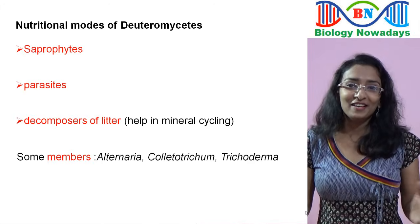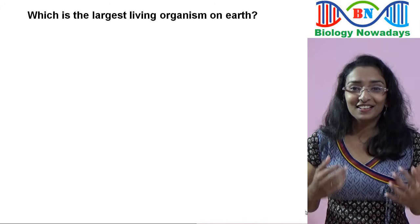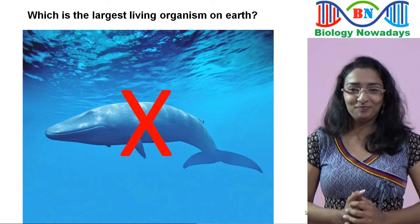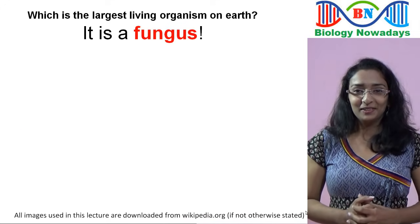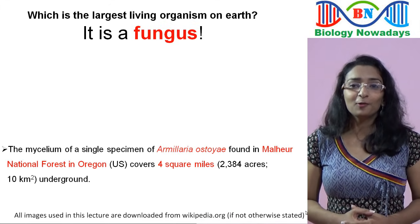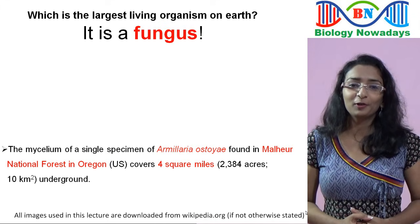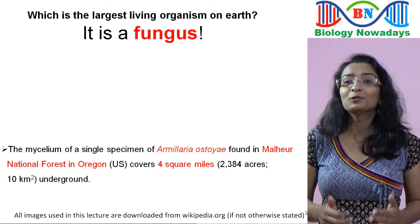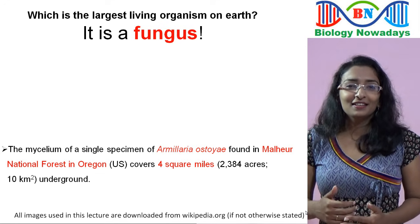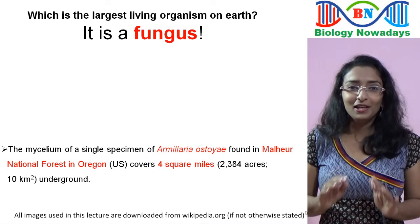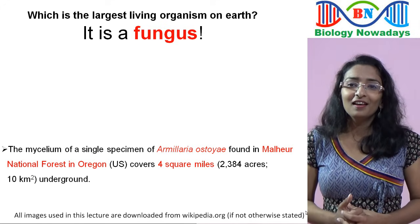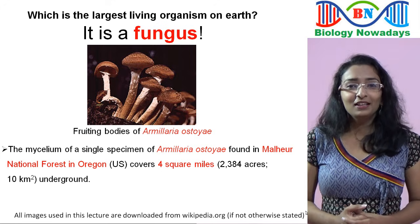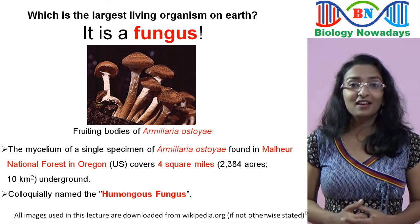Now it's time for a surprising fact. Do you know which is the largest living organism on earth? If your answer is the blue whale, then you are wrong — it's a fungus belonging to the genus Armillaria. The mycelium of a single specimen of Armillaria ostoyae found in Malheur National Forest in Oregon covers 4 square miles underground. This is why we compare a fungus to an iceberg. It's a little sad that since this largest organism lives underground, you will not be able to see it. But in autumn, the fruiting bodies of Armillaria ostoyae will appear as evidence of the organism beneath the soil. Colloquially, this fungus is named the 'humungous fungus,' meaning enormous fungus.